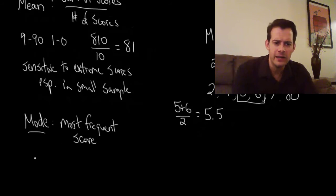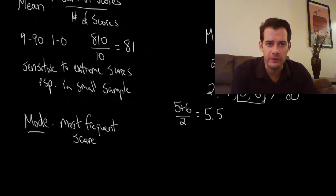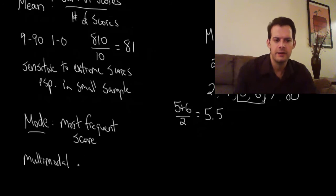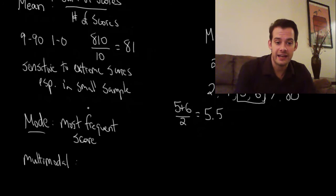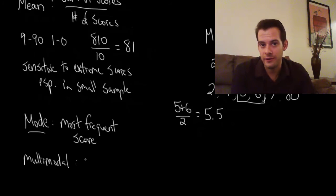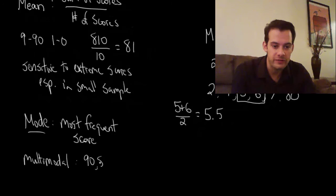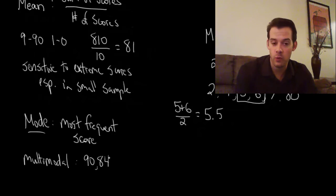You might ask: what do I do if I have more than one most frequent score? That's possible, and we call that a multi-modal distribution. For instance, if ten students took an exam and five of them scored 90 and five of them scored 84, then when I calculate the mode, the mode is 90 and also 84. So you can have more than one mode.